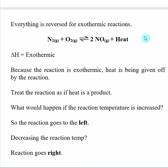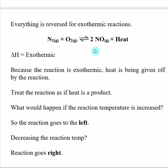Everything is reversed with exothermic reactions. With an exothermic reaction, it's almost like heat is a product, so we go ahead and write it on the product side. As the forward reaction goes on, we use up nitrogen and oxygen and make NO plus heat.